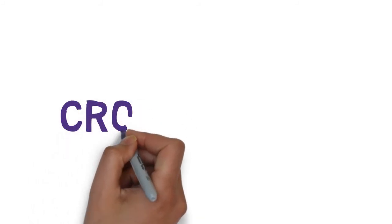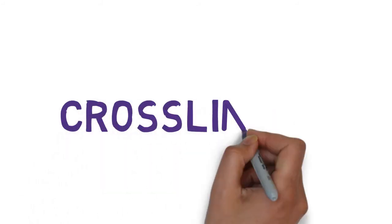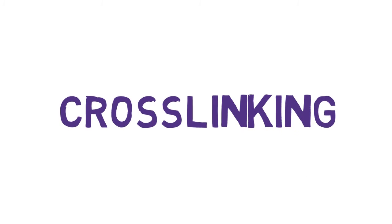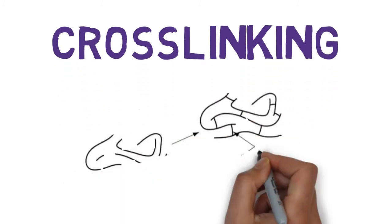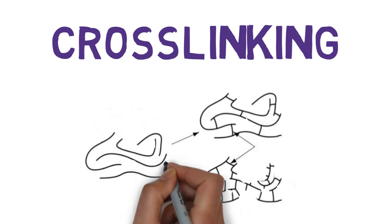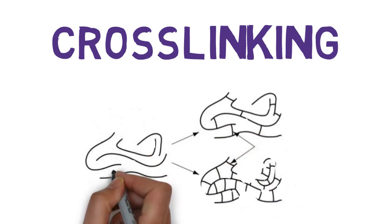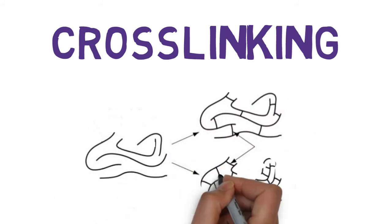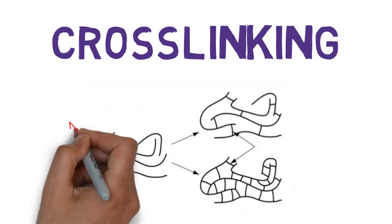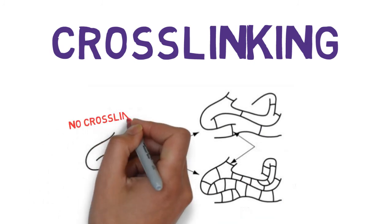There's something else that makes rubber stretchy. That is cross-linking. Most rubber objects are made of some kind of cross-linked rubber. Cross-linking is a way of chemically joining all the polymer chains of a piece of rubber into one giant molecule. You can see the difference between a polymer that is cross-linked and one that isn't.